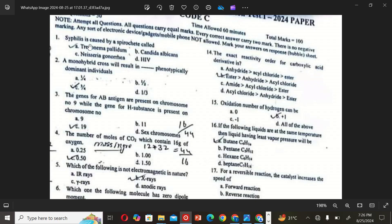The first MCQ is: Syphilis is caused by a spirochete called? So the correct option is A, Treponema pallidum.